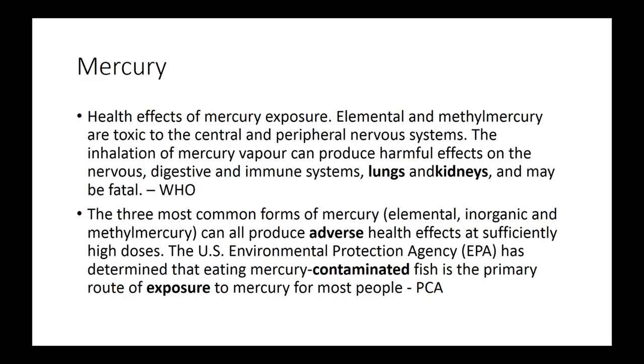Mercury. It can affect central and peripheral nervous systems. Harmful effects on nervous, digestive, immune systems, lungs, kidneys, and it could be fatal. So there's three types: elemental, inorganic, and methylmercury. They can all produce adverse health effects. And most exposure comes from mercury contaminated fish.